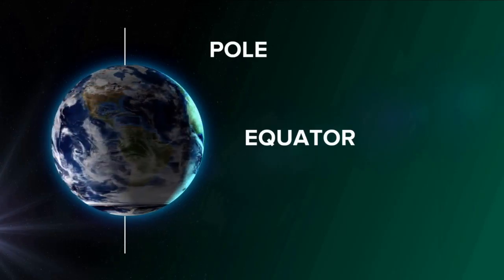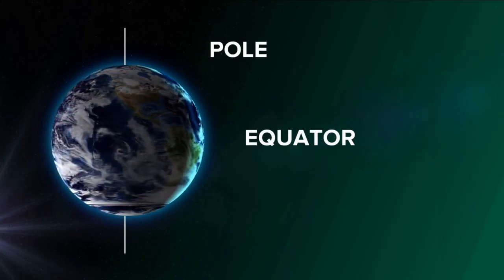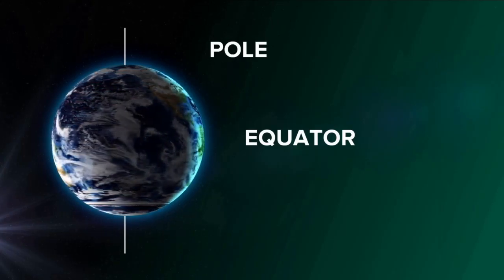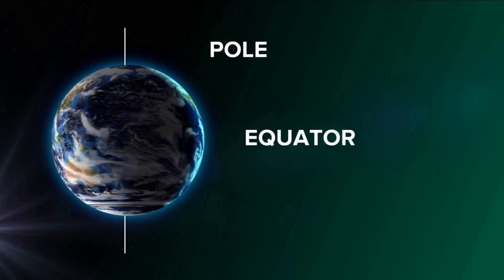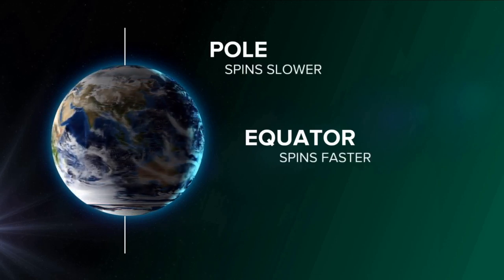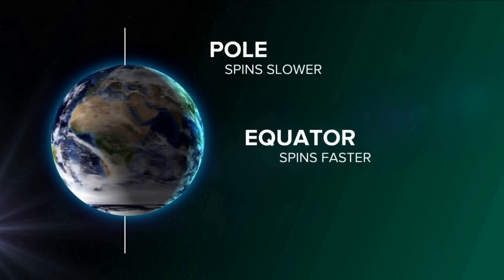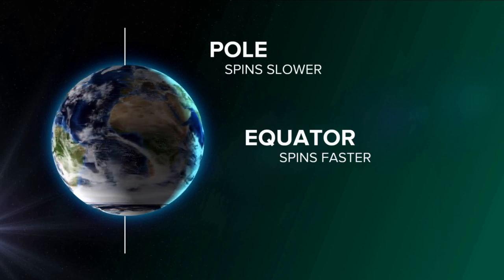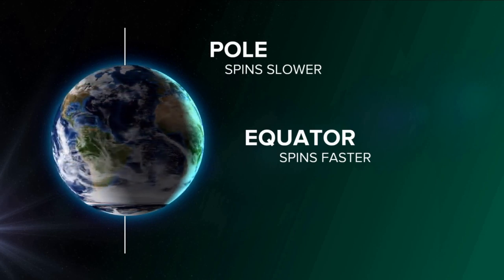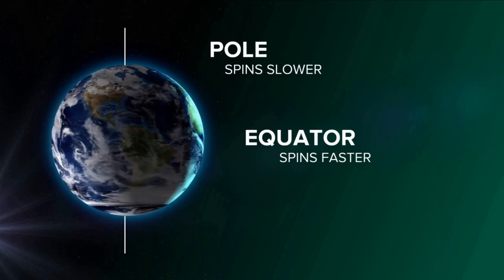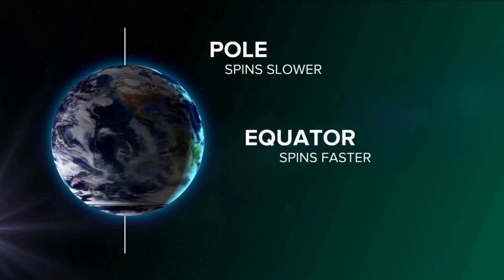Let's illustrate what this means. Our Earth is spinning around its axis at a constant rate, but because we are a sphere, points at the equator are spinning faster than points at the poles.